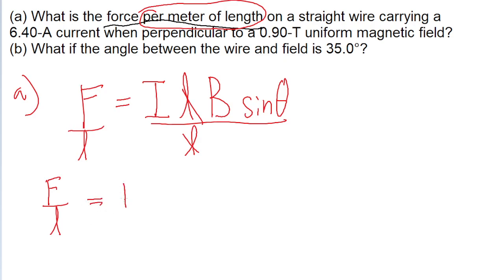This is equal to the current multiplied by the magnetic field multiplied by the sine of the angle. And now from here it's pretty simple. We just plug in the values that were given to us by the problem. So for the current, that's 6.4 amperes, for the magnetic field, that's 0.9 teslas, and the sine of the angle,